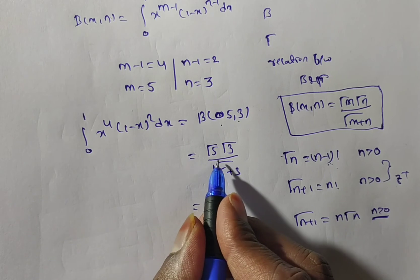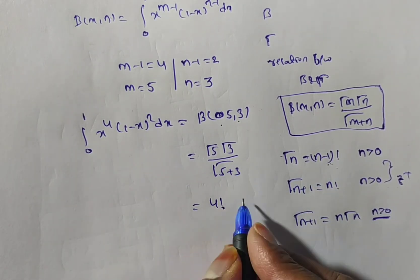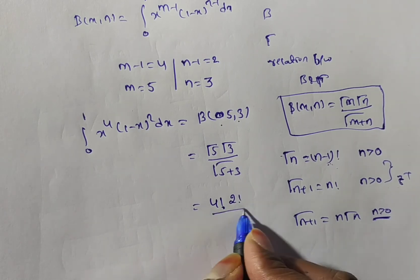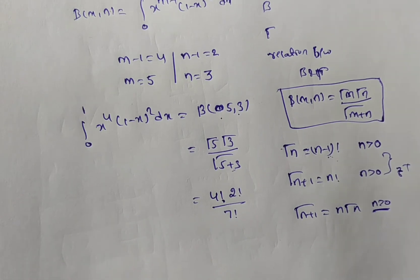Anyway, you see, gamma 5 is nothing but 5 minus 1 means 4 factorial. Gamma 3 is nothing but 3 minus 1 means 2 factorial. This is 8. Gamma 8 you can write 7 factorial.